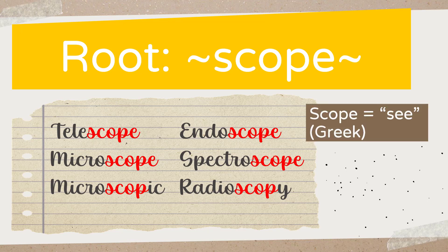The reason for that is because 'scope' is actually a Greek root — it does have a Greek origin, and it means 'see.' So when we look at all six vocabulary words, we can actually guess that the majority of them will be related to seeing.